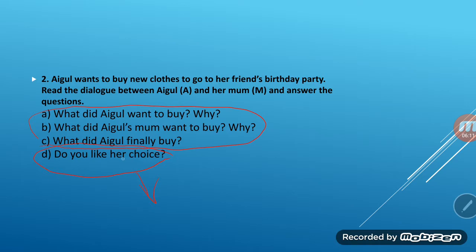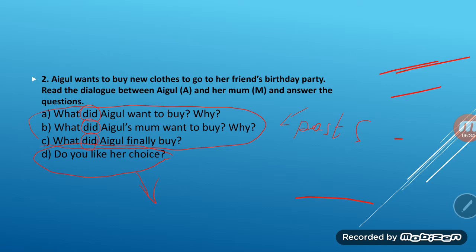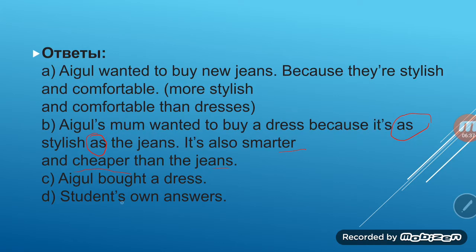Question C: 'What did Aigul finally buy?' [Russian: Students, note that if a question is in past simple, we always use 'did' instead of 'do'. Don't forget — all these questions are in past simple, referring to past time.] Aigul bought a dress. In the question we had 'did buy', but in the answer we use the second form: 'bought'. Aigul bought a dress.